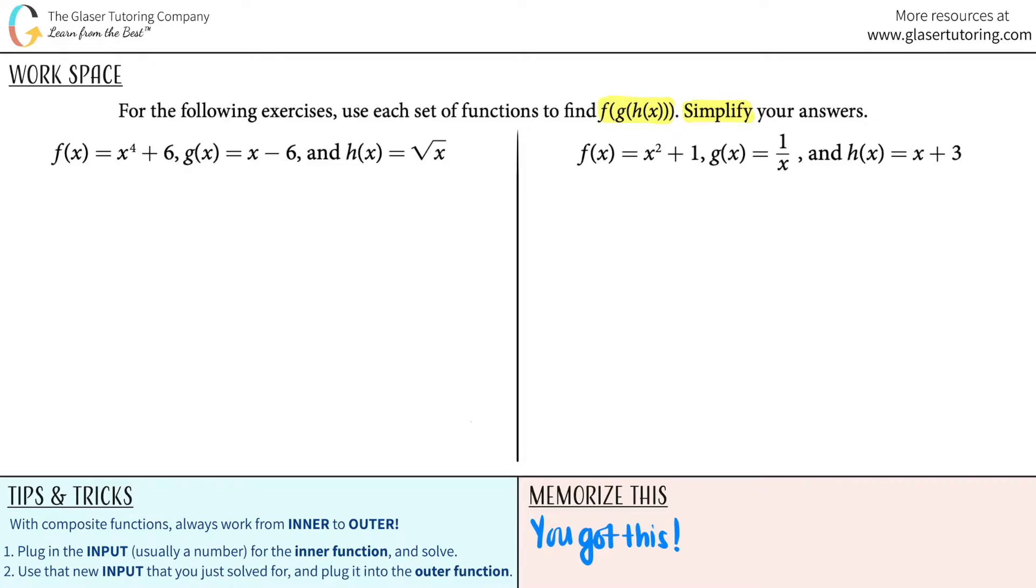Composite functions look really scary but they're not. Look down here on the tips and tricks. With composite functions you will always work from the inner function to the outer function, and what I mean by inner and outer is basically parentheses. You always work from the innermost function that's inside the parentheses and then you branch outwards. Composite functions are just a fancy way of saying that we're taking, in this case, three independent functions and we're meshing them all together to get one output. I'm gonna work on the left hand one for now and I'm gonna follow these steps down here on the tips and tricks.